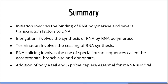In summary: initiation involves the binding of RNA polymerases and several transcription factors to DNA; elongation involves the synthesis of RNA by RNA polymerase; termination involves the cessation of RNA synthesis; RNA splicing involves the use of special intron sequences called acceptor sites, branch sites, and donor sites; and the addition of the poly-A tail and 5' cap are essential for mRNA survival and function. That is it for transcription. Thank you for watching. See you on the next lecture.